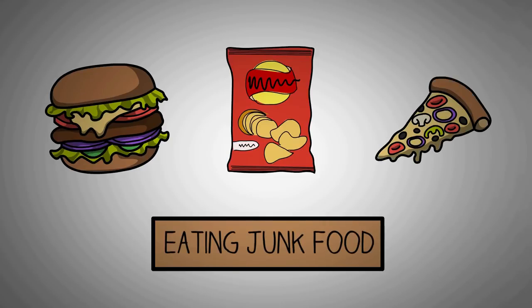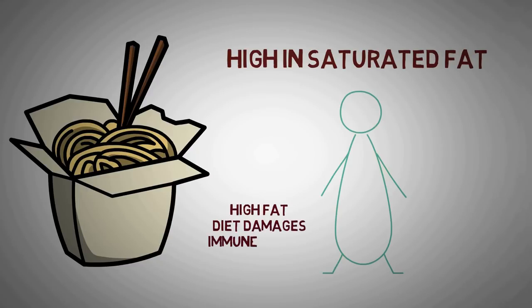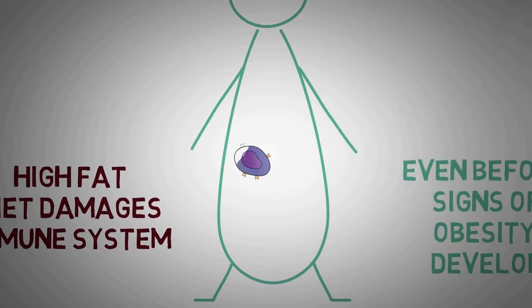Eating junk food in excess can be bad for your immunity. Junk food is often high in fat, and eating excess fat is one of the key reasons behind obesity. A diet high in saturated fat can harm the immune system even before the weight gain begins to show. Obesity can affect the ability of white blood cells to multiply and produce antibodies, thus making you more prone to infections.